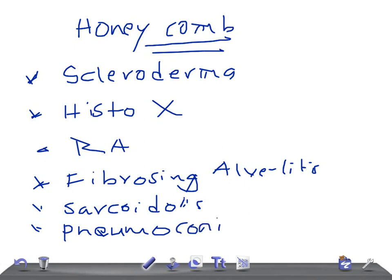This is a quick video, that's why I'm going to discuss very fast. I'm going to just list out the causes; regarding the individual diseases, I'm going to speak in different videos that I'll upload later. So those are the important causes: scleroderma, histiocytosis X, rheumatoid arthritis, fibrosing alveolitis, sarcoidosis, and pneumoconiosis.